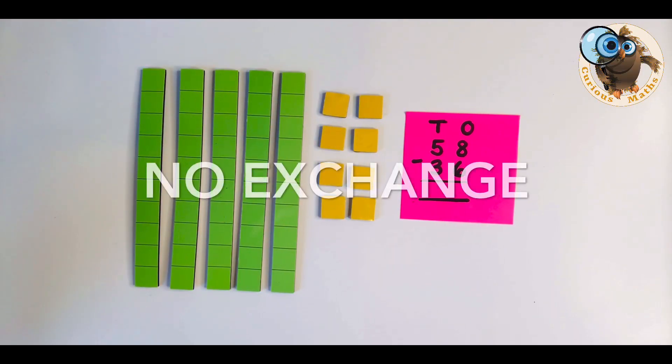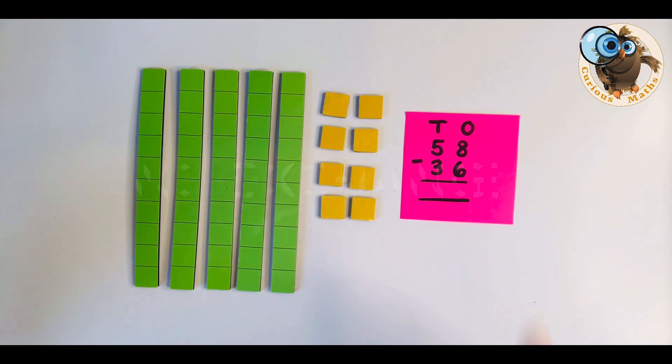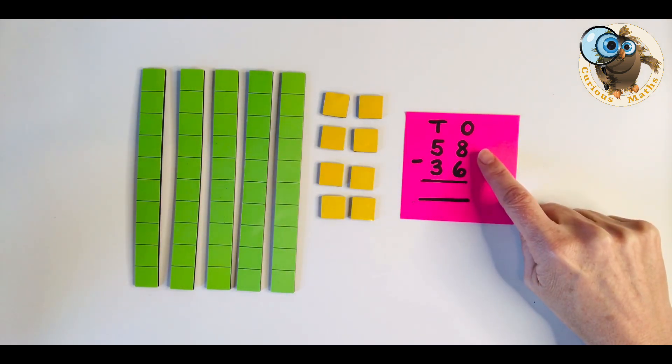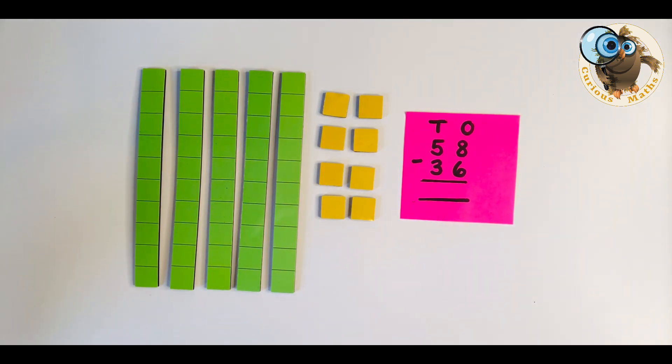So you'll start your week with a build and this is a really important part of the build it, draw it, write it, say it approach and you may start with a rather simple question one which doesn't require exchanging. The important thing to remember about when doing a build with subtraction is that you only represent the first number, the largest number, the number that you're going to take something from and the reason is if I was to represent 36 next to this 58 then take the 36 away I would still have 58 remaining so just something to watch out for.